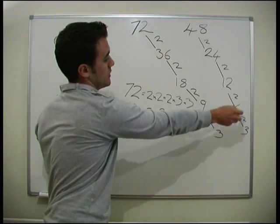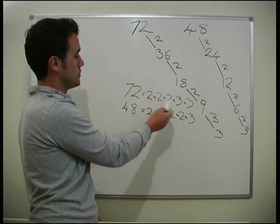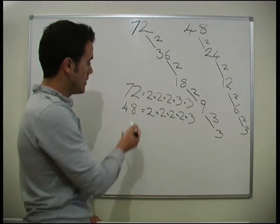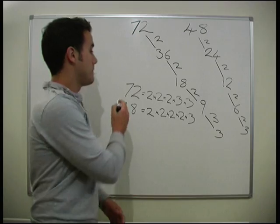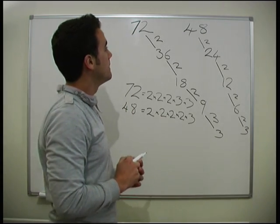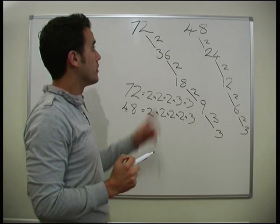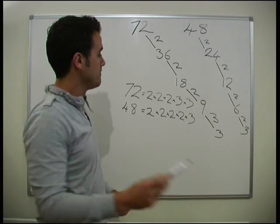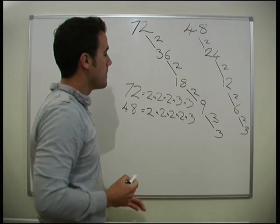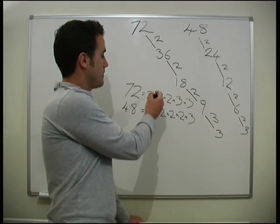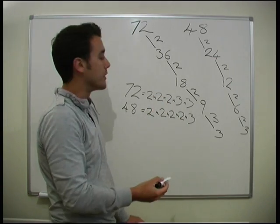One, two, three, four twos and three. Two twos, three twos. Why on earth would this be helpful? Well, from this we can actually very simply find the lowest common multiple of 72 and 48. Now, when we do that, we look at the prime factors and we just cross off whenever we have a duplicate, cross off one of them.